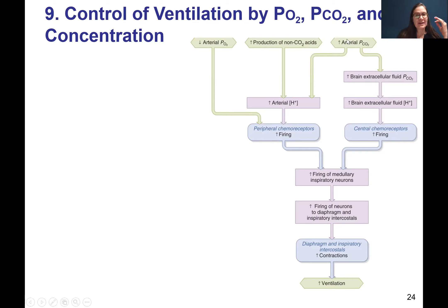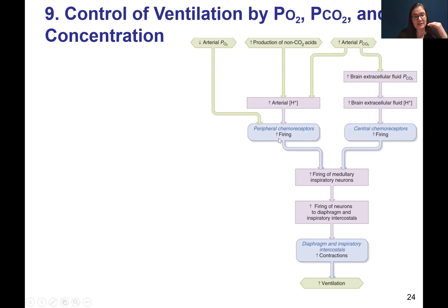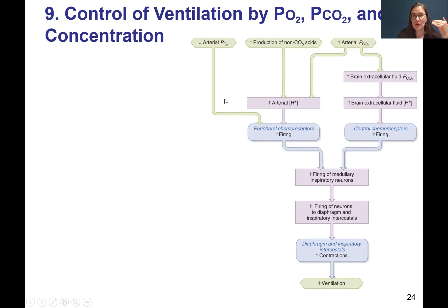Also, having high arterial PCO2 or high lactic acid, both of those will lead to acids in the blood. So lots of protons as the acids dissociate, and the protons are the things that are picked up by chemoreceptors. It's a separate chemoreceptor for the protons versus the oxygen. Both of them, though, will increase in firing under these conditions — either very, very low O2 or more protons in the blood, more acidity in the blood.